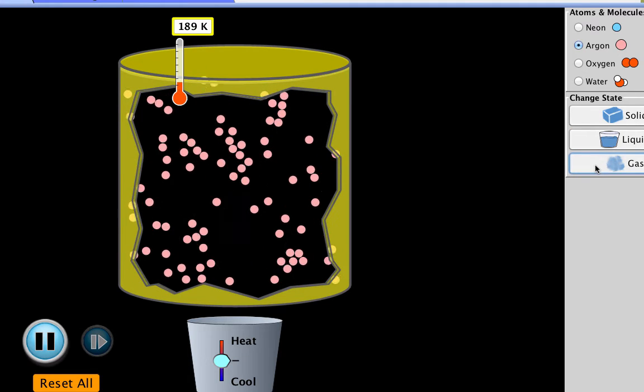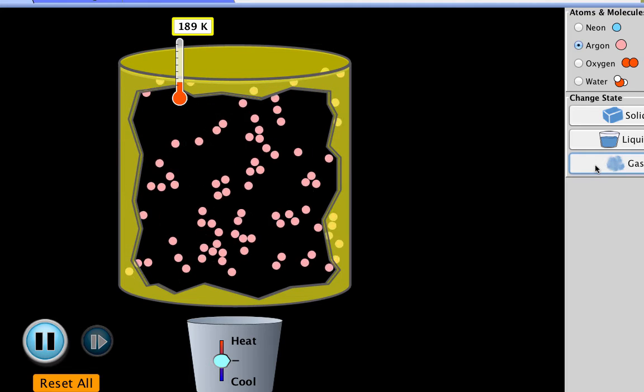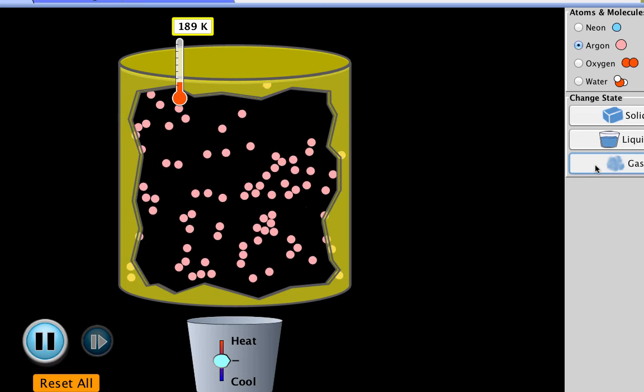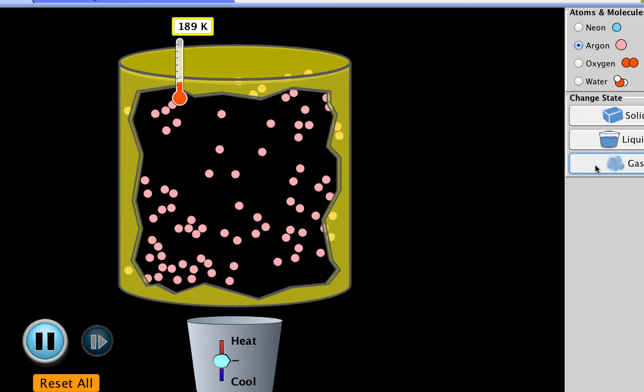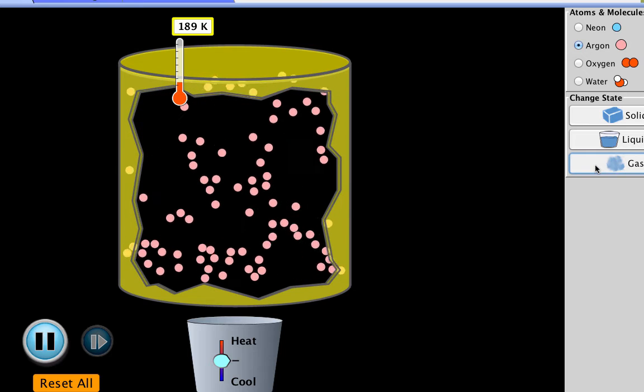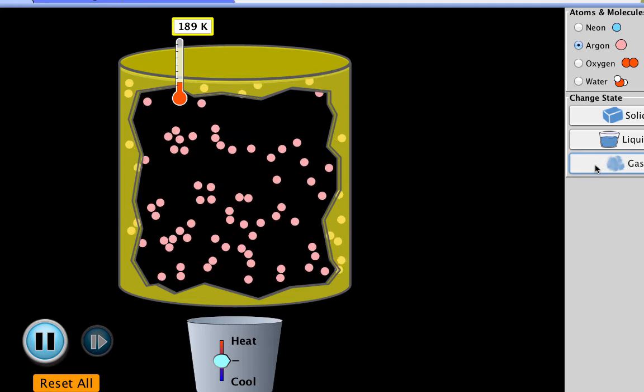Finally, in the gas phase, we see that the particles aren't sticking together at all. There are hardly any attractive forces between them. We also see that the particles are moving all over the place. There's no limit to where they can move. And this is really much less orderly than the solid or the liquid phase.